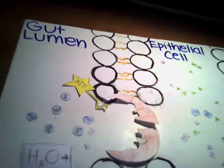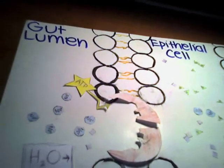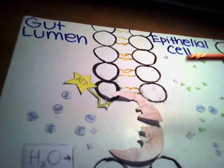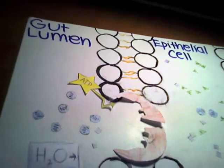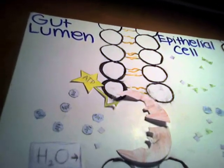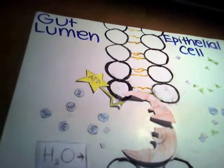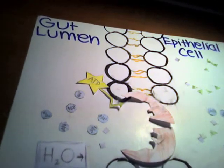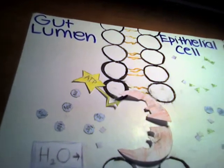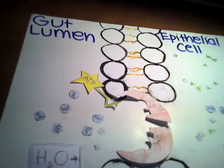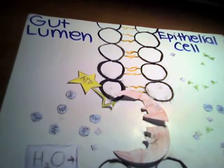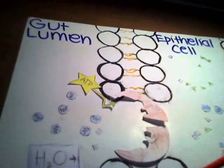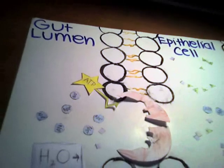Since glucose is going against its concentration gradient, ATP must be used. This is why it's known as a type of active transport. Active transport is when energy must be used in order to transport a substance across the lipid bilayer.